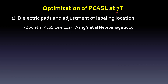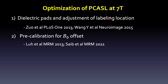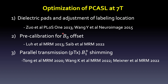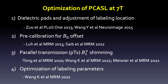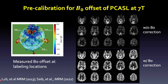In terms of optimization of PASL at 7T, there have been several approaches. First, dielectric pads to extend B1 field and adjustment of labeling location. They use pre-calibration of B0 offset and parallel transmission PTX B1 shimming to improve B1 field, as well as optimization of labeling parameters. Here is the work by Dr. Weiming Lu and Dr. Laleh Afghah Talagaras group at NIH, using gradient to compensate for the phase offset. You can see the dramatic improvement of labeling efficiency and PASL perfusion image quality with B0 correction.